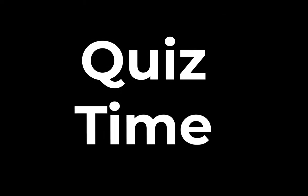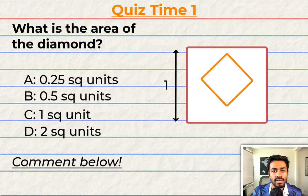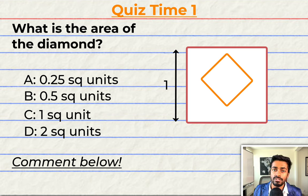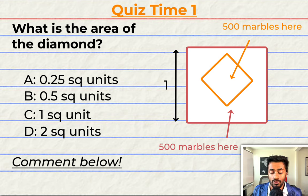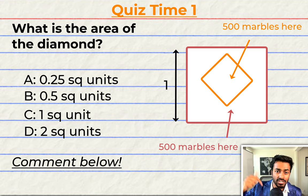Quiz time! Have you been paying attention? Let's say we have a square of side 1 and a diamond inside that square, such that if we do a marble dropping simulation of 1000 marbles, 500 of them fall within the diamond and the other 500 fall outside the diamond but still within the square. What is the area of the diamond? Is it 0.25 square units, 0.5 square units, 1 square unit, or 2 square units? Comment your answer below with your reasoning.